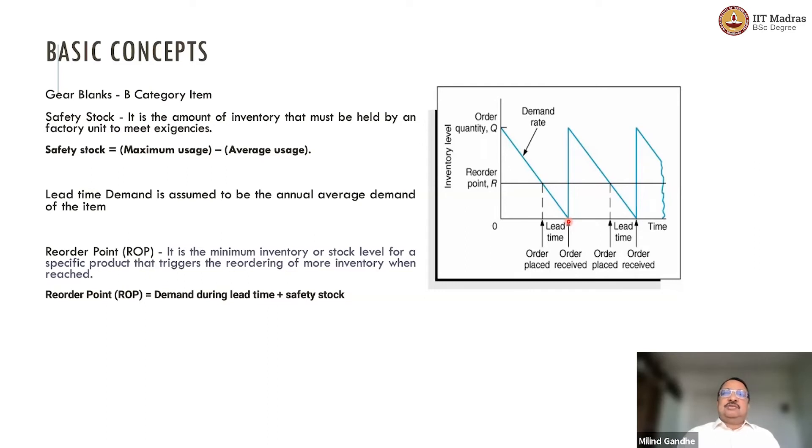So, you should figure out how much time it takes. Let us say it takes 3 days for us to get new stock. Then whatever amount of blanks we need for 3 days worth of production. So, if the lead time takes 3 days, then whatever quantity of blanks we need for 3 days production, as soon as we hit that point, we should reorder. That is called reorder point, which is basically demand during lead time plus safety stock.